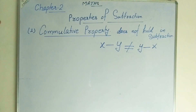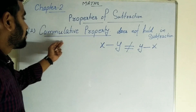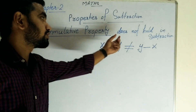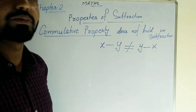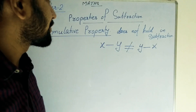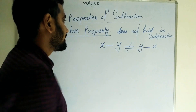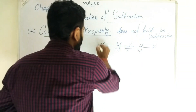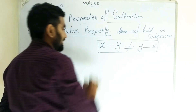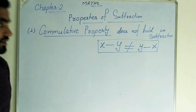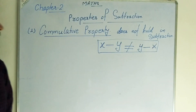Write this in your notebook: commutative property does not hold in subtraction of rational numbers. It means x minus y is not equal to y minus x.